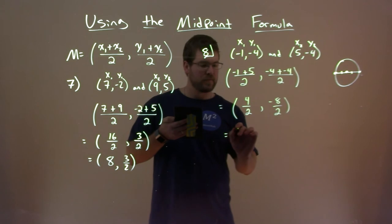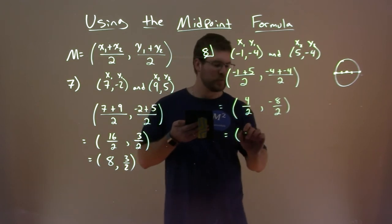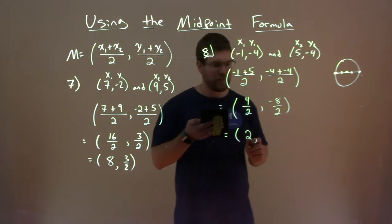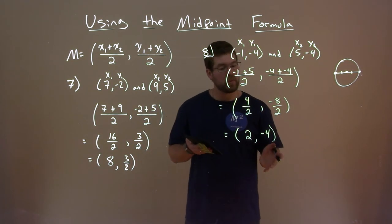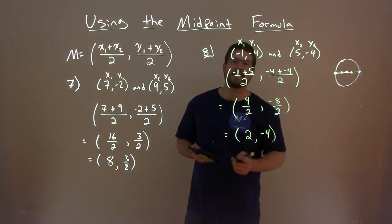Simplify both of those. 4 divided by 2 is 2, and negative 8 divided by 2 is negative 4. So the center of our circle and our midpoint here is 2, negative 4.